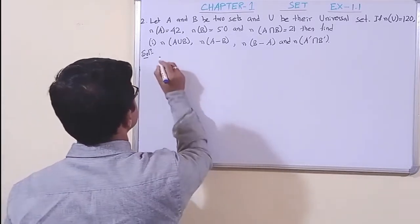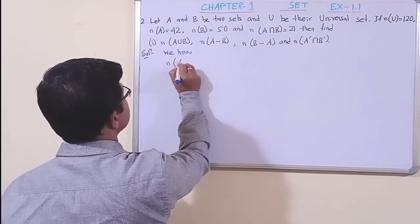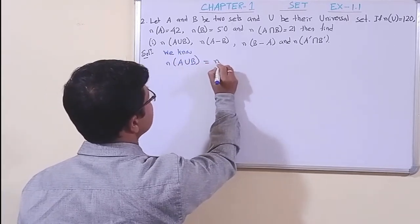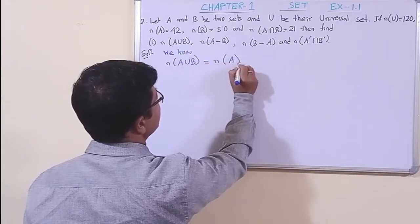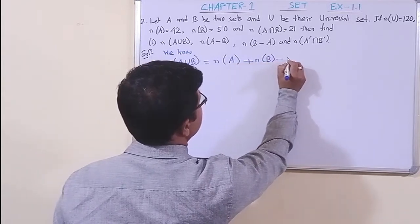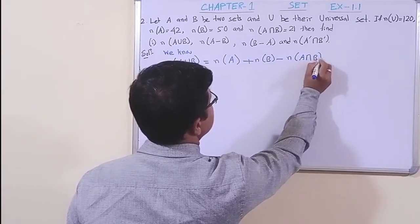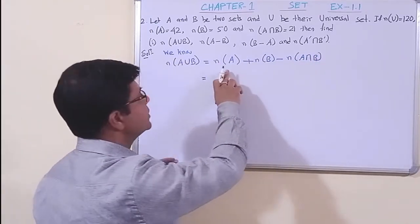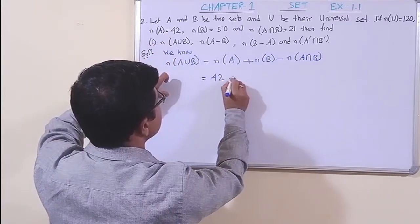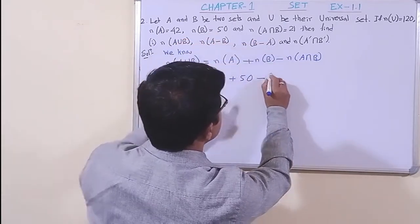We know the formula: n(A∪B) = n(A) + n(B) − n(A∩B). Now let us put in their values: n(A) = 42, n(B) = 50, and n(A∩B) = 21, giving us n(A∪B) = 71.